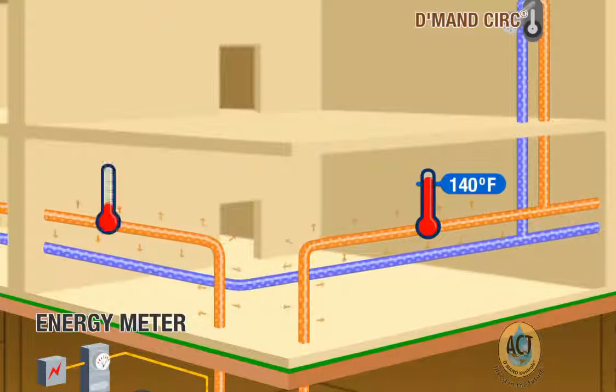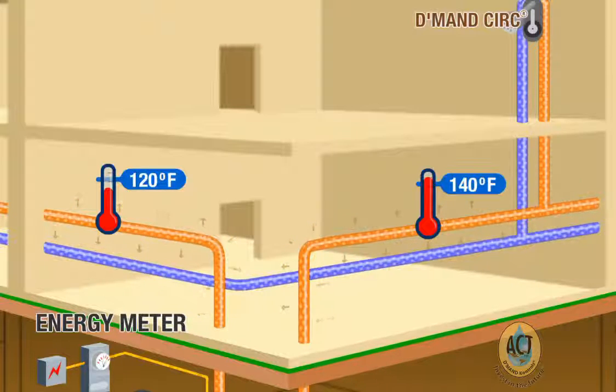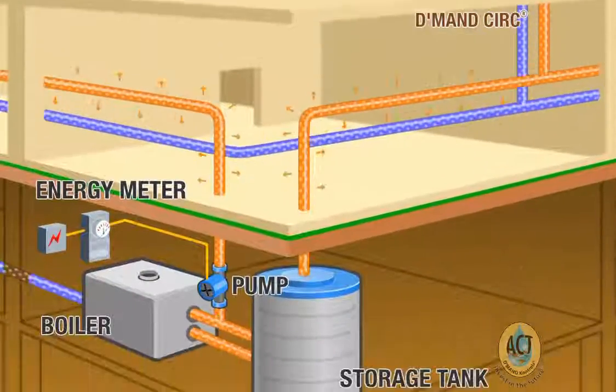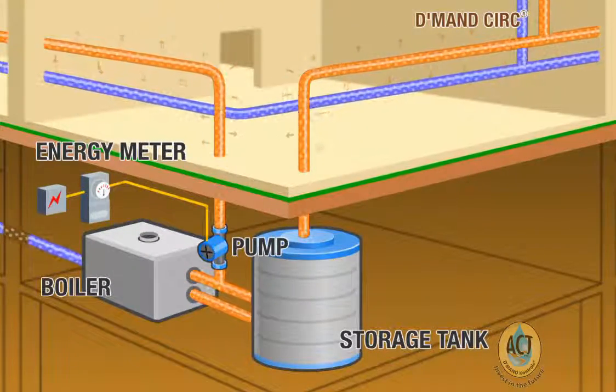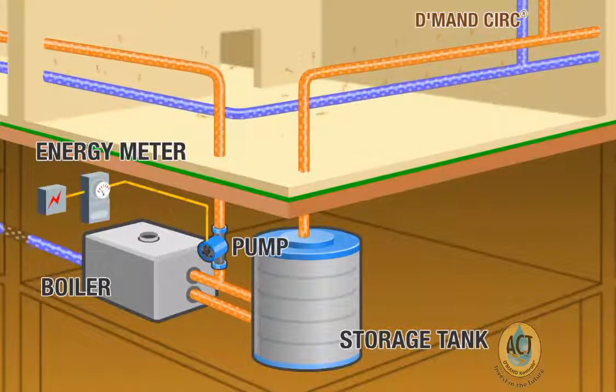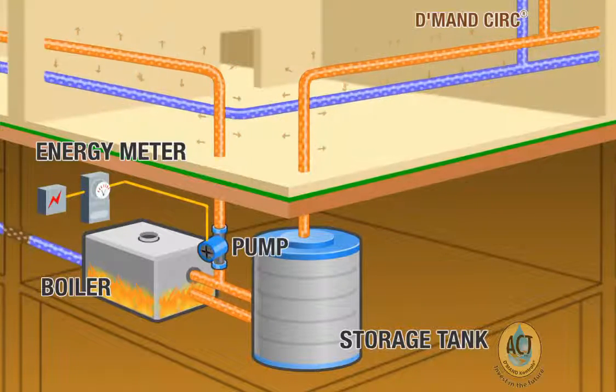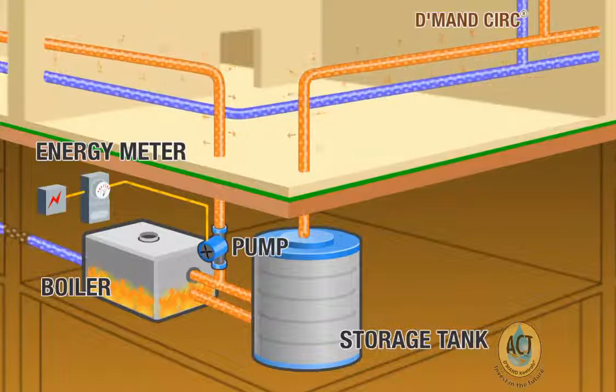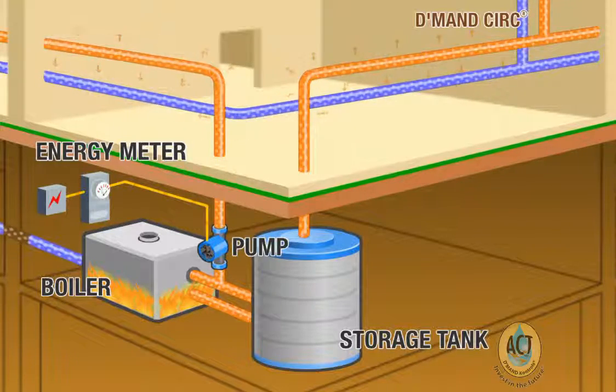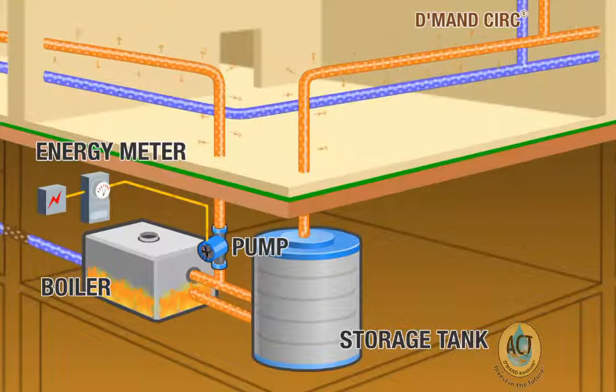By the time the water has circulated back to the storage tank, it is often much cooler than it was when it left, and this cooler water is being dumped back into the storage tank constantly, whether or not occupants are actually using hot water. This loss in heat must then be made up by the boiler or water heater, resulting in excessive gas or electricity consumption.